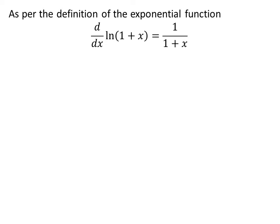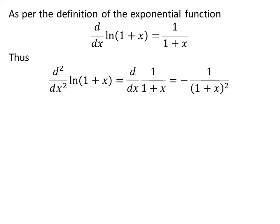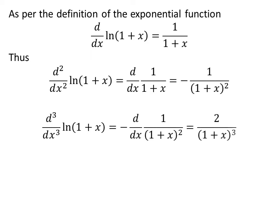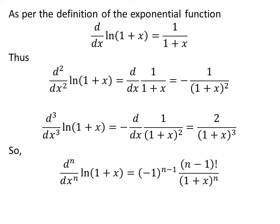The first derivative of natural log of 1 plus x is equal to 1 upon (1 plus x). The second derivative is equal to minus 1 upon (1 plus x) squared. The third derivative is equal to 2 upon (1 plus x) cubed. The nth order derivative of natural log of 1 plus x is equal to (minus 1) raised to the power (n minus 1) times (n minus 1) factorial, upon (1 plus x) raised to the power n.